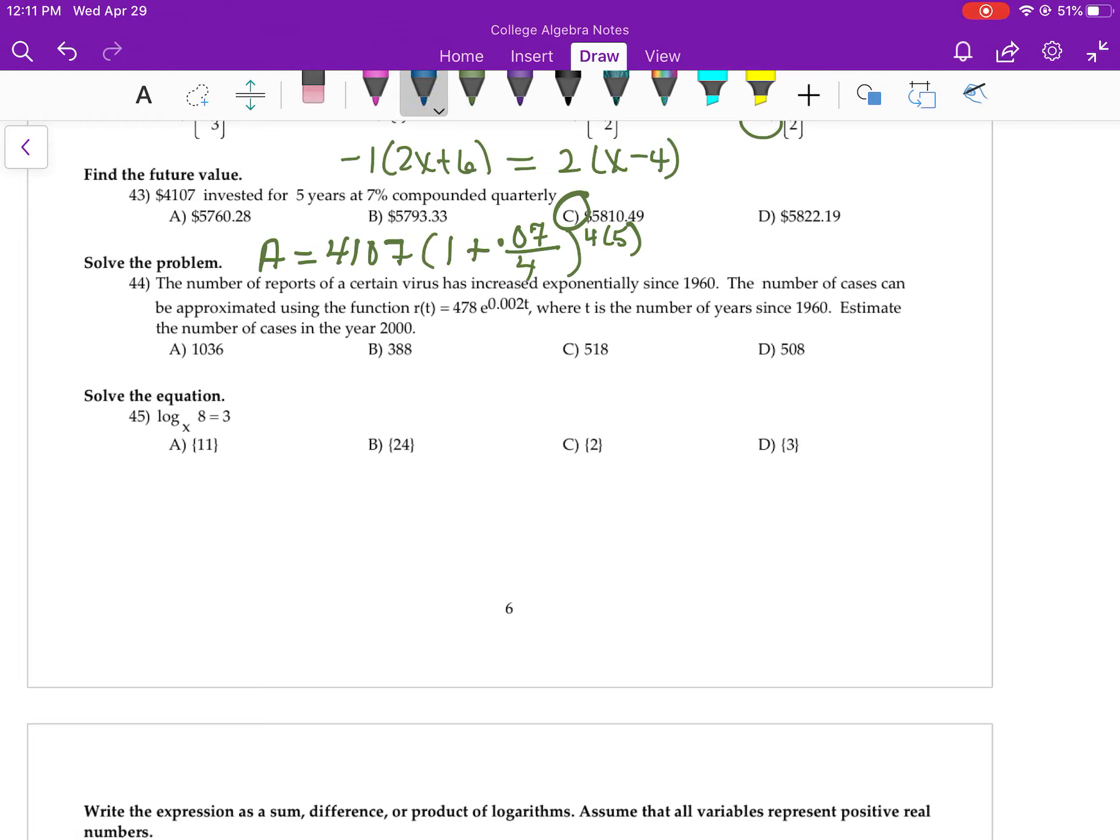If I'm estimating the number of cases in the year 2000, that means my T is 40. So I'm simply going to plug 40 in for T and go for that. So that's not that big of a deal. The answer is C.